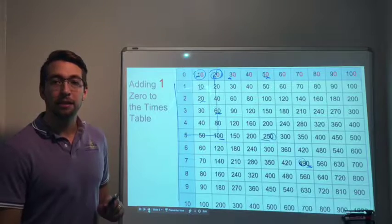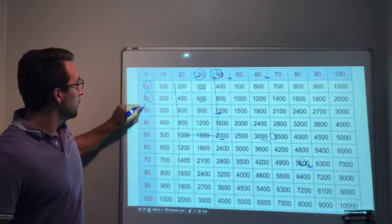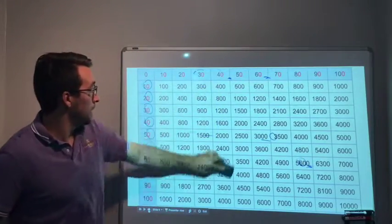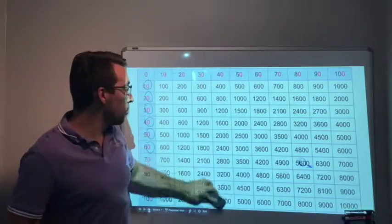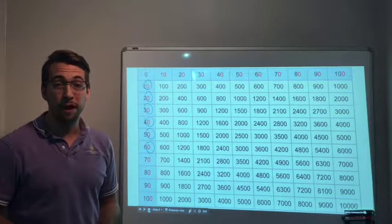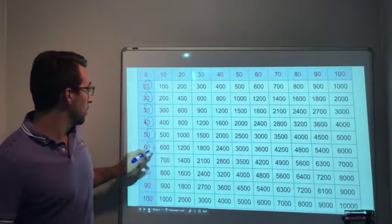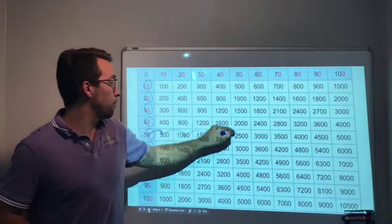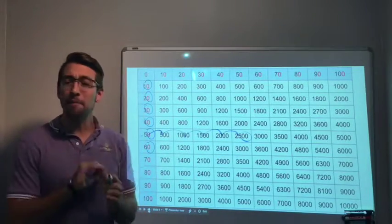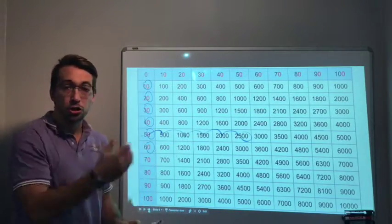Watch what happens when we add a second zero. Now we have two extra zeros. If we know our times tables: 5×5 is 25. What's 50×50? Well, there's two zeros, so 2500. That's amazing. If we add zeros to the multiplication, to the times table, you just have to add them to your product, add them to your answer.